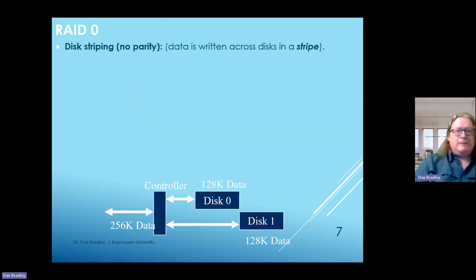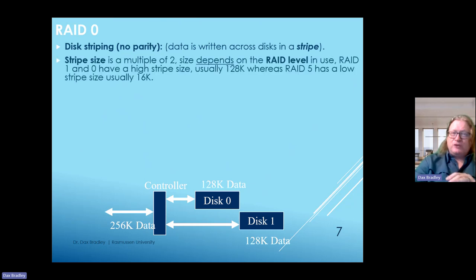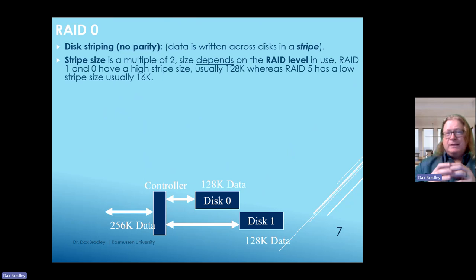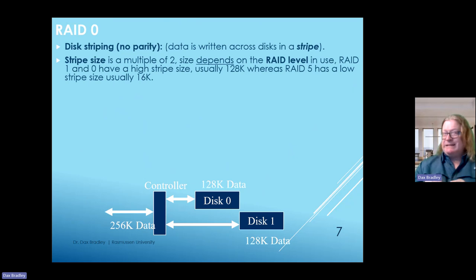Let's take a look at a basic layout starting with RAID 0. RAID 0 is considered zero in its disk striping, implying no parity is involved. The data is written across the disks in a single stripe. The stripe size is a multiple of two—an even number—depending on the RAID level in use. RAID 1 and 0 have a high stripe size, usually 128K, whereas RAID 5 has a low stripe size, usually around 16K.